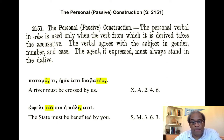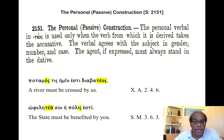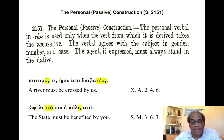The second example, from Xenophon again: 'The state must be benefited by you.' ōphelētea soi hē polis estin. Again, hē polis is feminine, singular, nominative, as is ōphelētea — long alpha. 'The state must be benefited by you.' The dative soi expresses the agent.